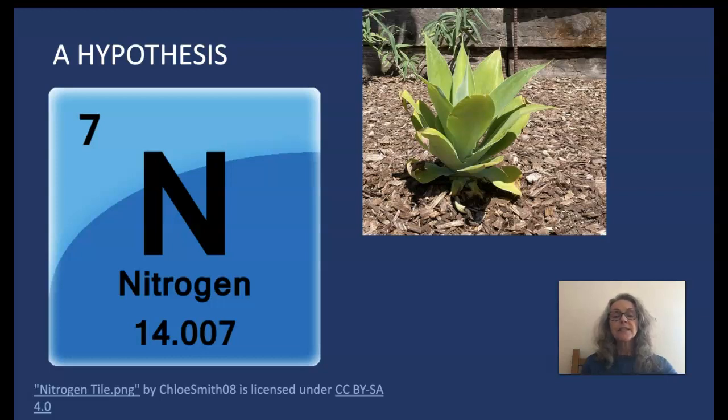A control represents a standard for comparison. Both plants are grown under exactly the same conditions so that there is only one variable, the nitrogen. The nitrogen is called the independent variable and growth is called the dependent variable. It is the variable being measured.